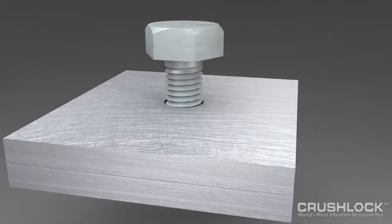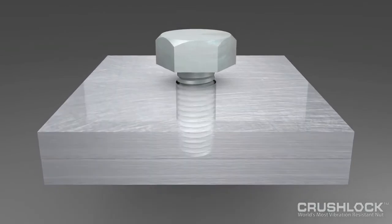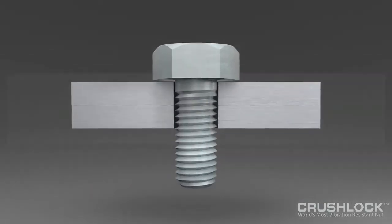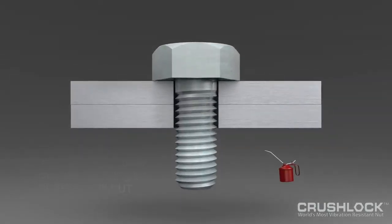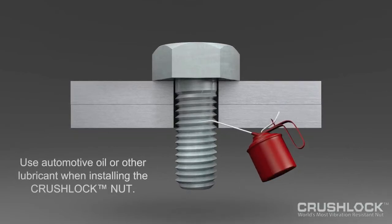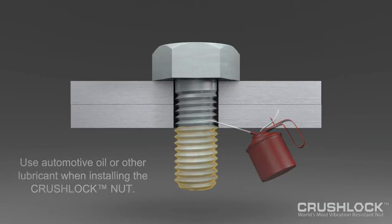Instead, it uses permanent internal pressure. Because vibration cannot affect Crushlock Permanent Nut's permanent internal pressure, vibration is no longer a factor and has no effect on a properly installed nut. Laboratory testing has shown that